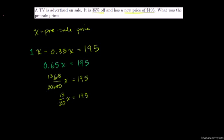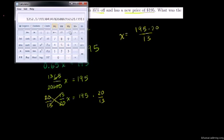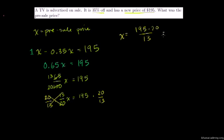Let's simplify this equation. We multiply both sides by 100: 65x/100 = 195. Then 13x/20 = 195. We can divide both sides by 13/20. So x = 195 divided by 13, multiplied by 20, which equals 300 dollars.